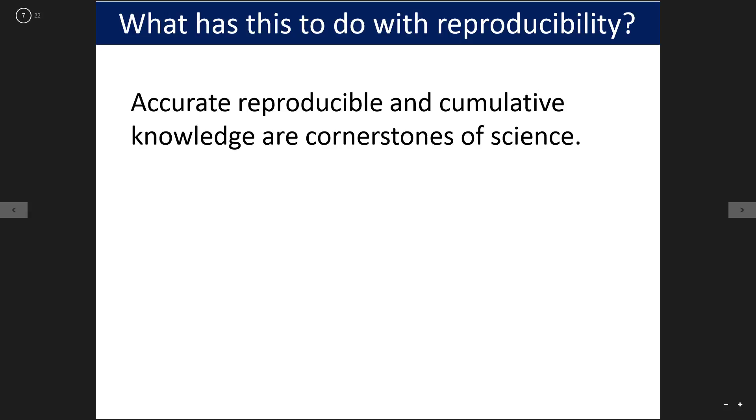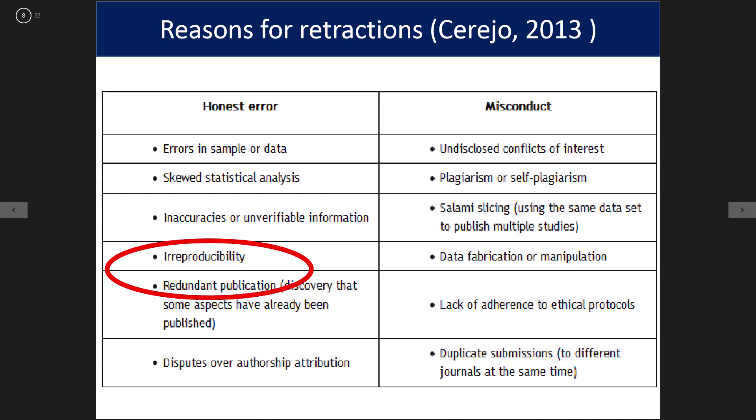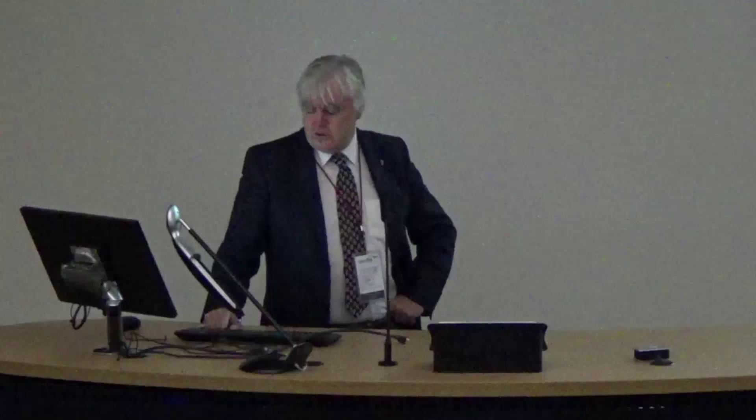What has that got to do with reproducibility? What several people have talked about in this session is the belief — the knowledge — that we can trust our science, we can trust our scientists and policy makers to act on accurate, reproducible and cumulative knowledge. Do we have it? We don't know. The reasons for retractions include misconduct and honest error, one of which is irreproducibility. We've heard some examples of that already this morning.